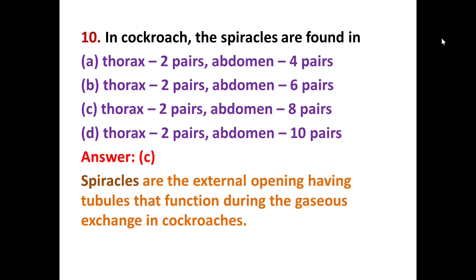The last MCQ: in cockroaches, spiracles are found in how many pairs? The correct option is C — two pairs of spiracles are present in the thorax, and eight pairs in the abdominal region, making a total of ten pairs of spiracles. Spiracles are external openings with a tubular structure whose function is gas exchange in cockroaches.